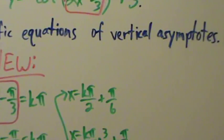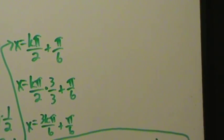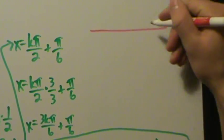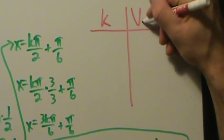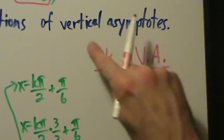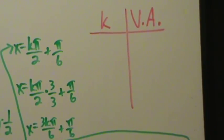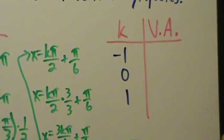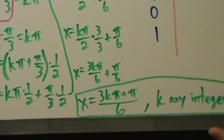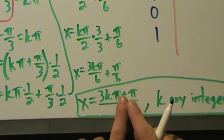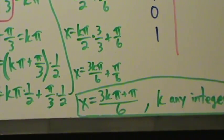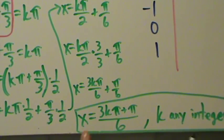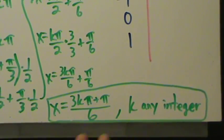The other part is to find three specific equations of vertical asymptotes. We'll set up a chart with column k and column VA (vertical asymptote). We only need three specific equations, so let's choose k equals negative 1, 0, and 1. The expression is 3k pi plus pi all over 6. It's good to keep the values of k small, and we can use any three integer values we want.